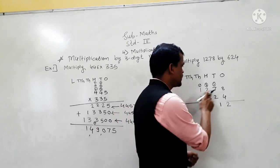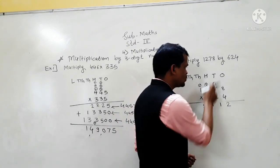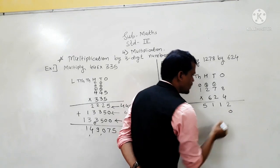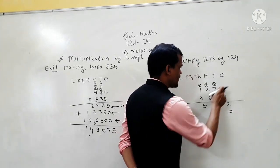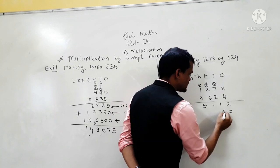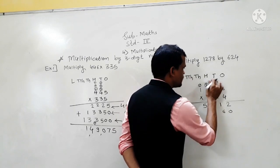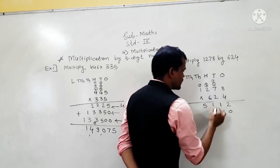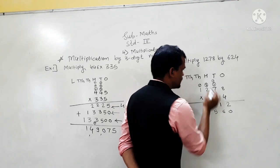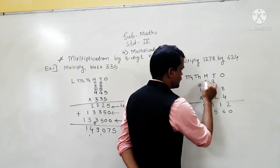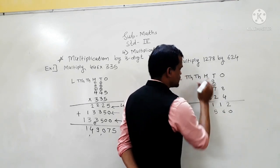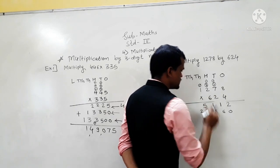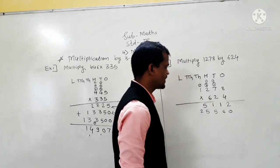Multiply 1278 by the 2 tens digit — 2 tens means 20 — so write 0 here. Then multiply: 2 eights are 16 — write 6 here and carry 1. 2 sevens are 14, 14 plus 1 is 15 — write 5 here and carry 1. 2 twos are 4, 4 plus 1 is 5. Then 2 ones are 2. This is the second step.